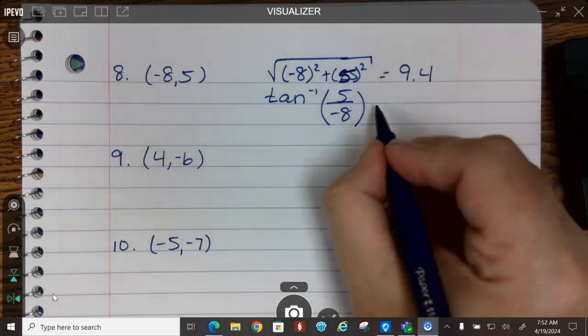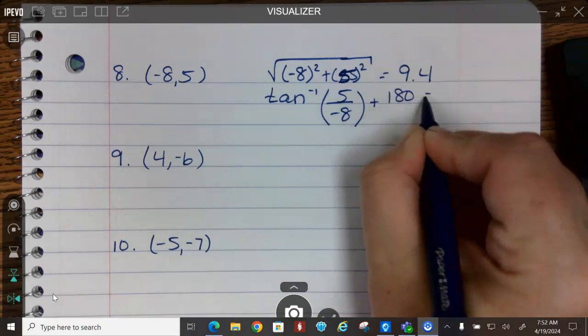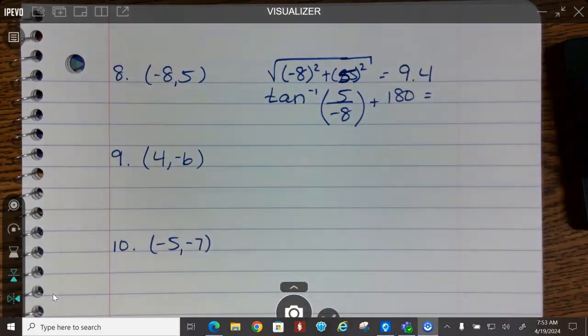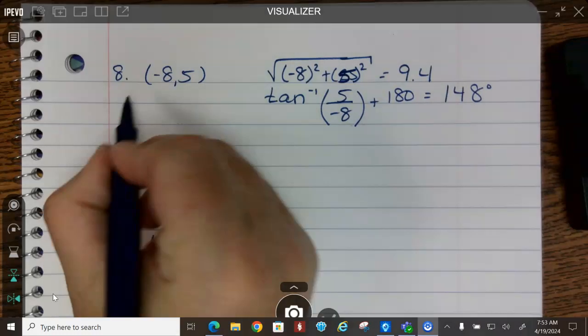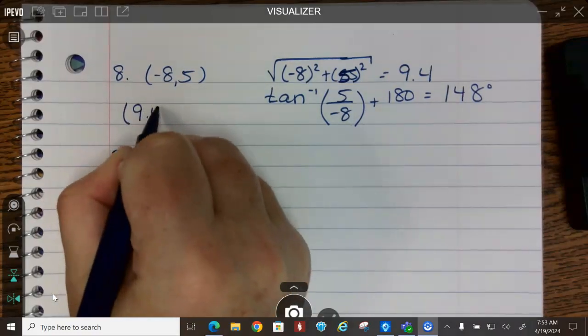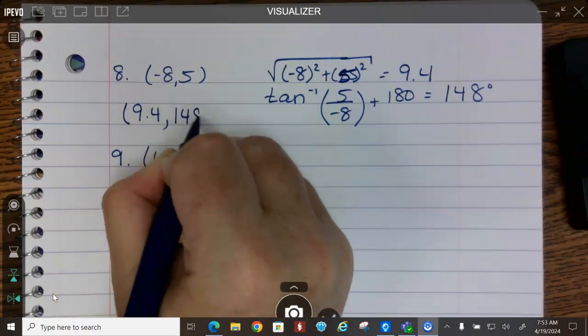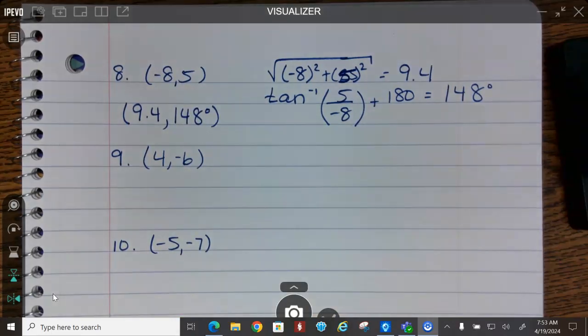If I were to graph this, this would be in quadrant two, so we're going to add 180. 5 divided by negative 8 plus 180, and we're going to call this 148 degrees. So my final answer is 9.4 comma 148 degrees.